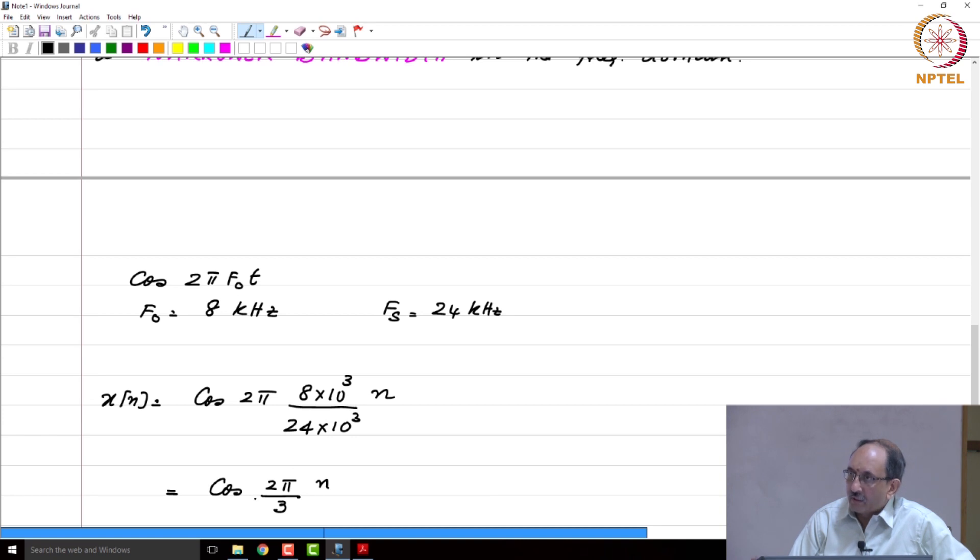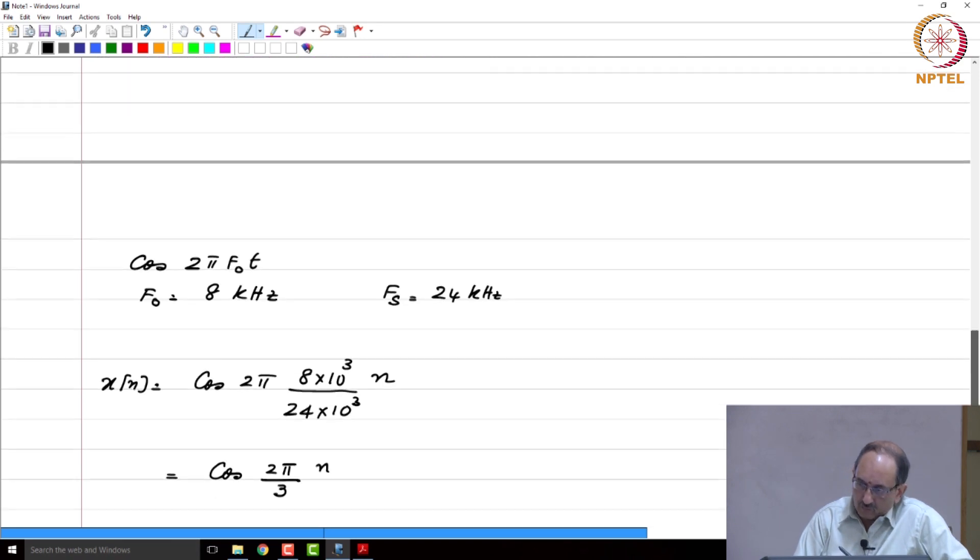So, this is the discrete time sequence that is going to result when you sample an 8 kilohertz cosine at 24 kilohertz.